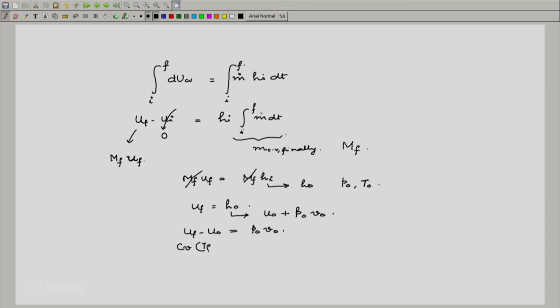So what we can do now is uf minus u naught equals p naught v naught, and this is nothing but cv times (Tf minus T naught) equals p naught v naught, and we can write this as R T naught. Once we have this, we can write T final as T naught plus R by cv times T naught, or we could multiply cv here. cv plus R is cp, and then we would have cp by cv times T naught, which is equal to gamma T naught.